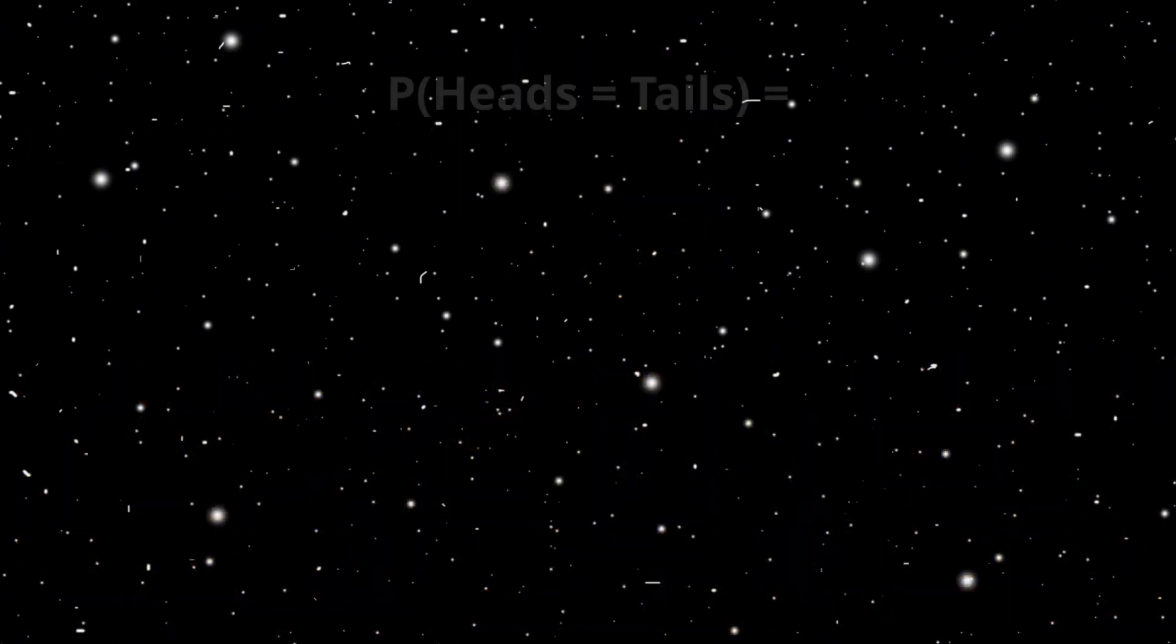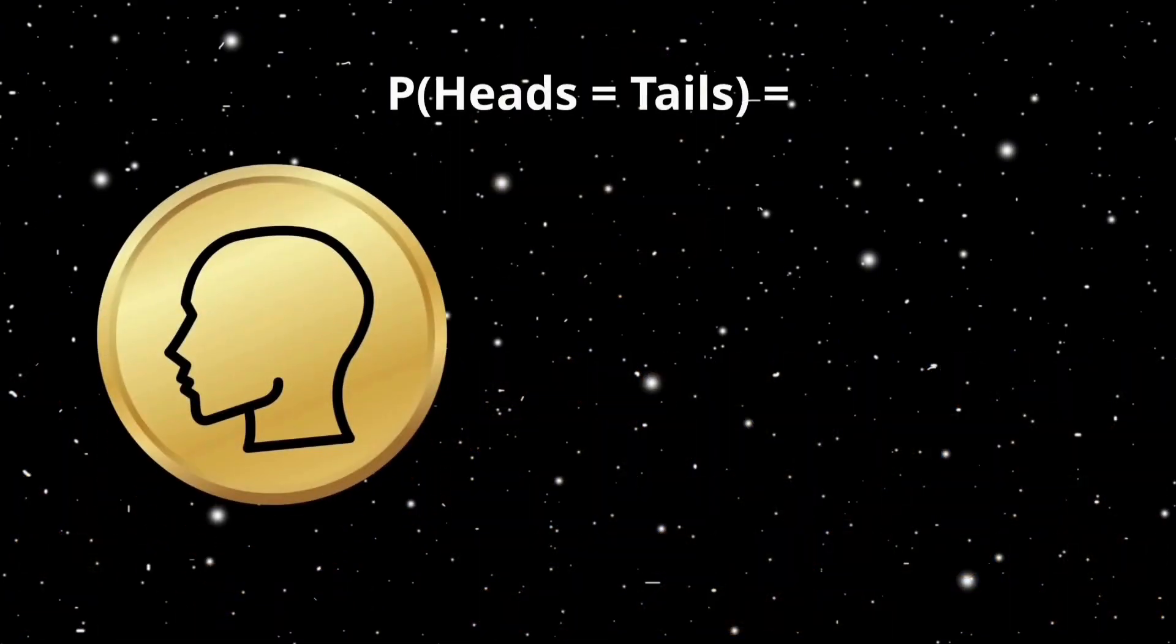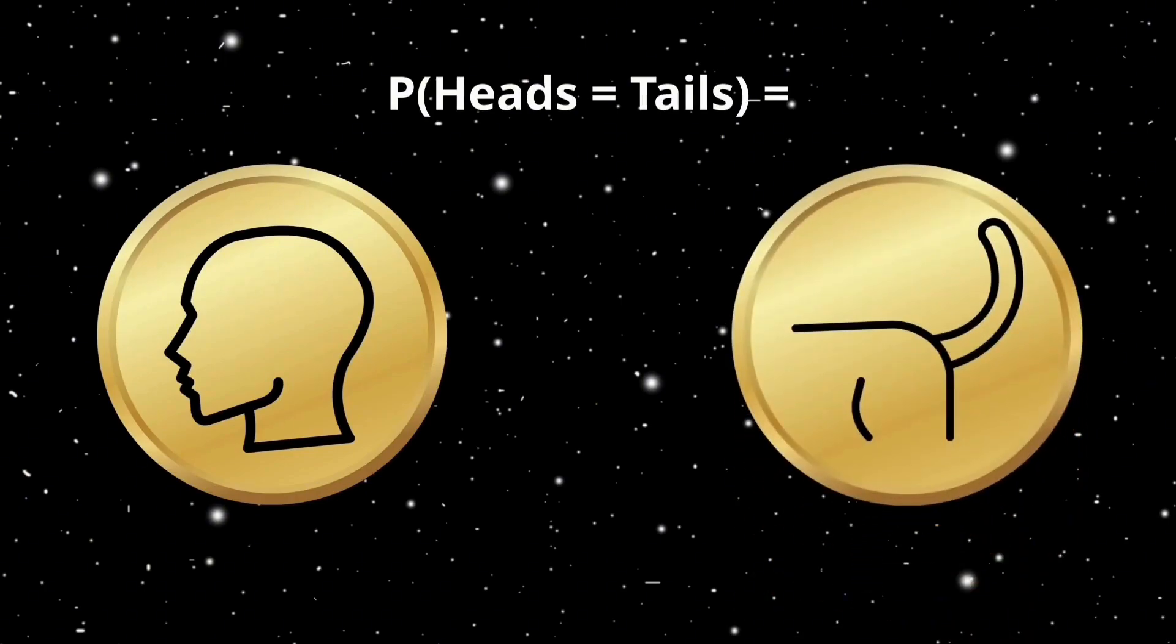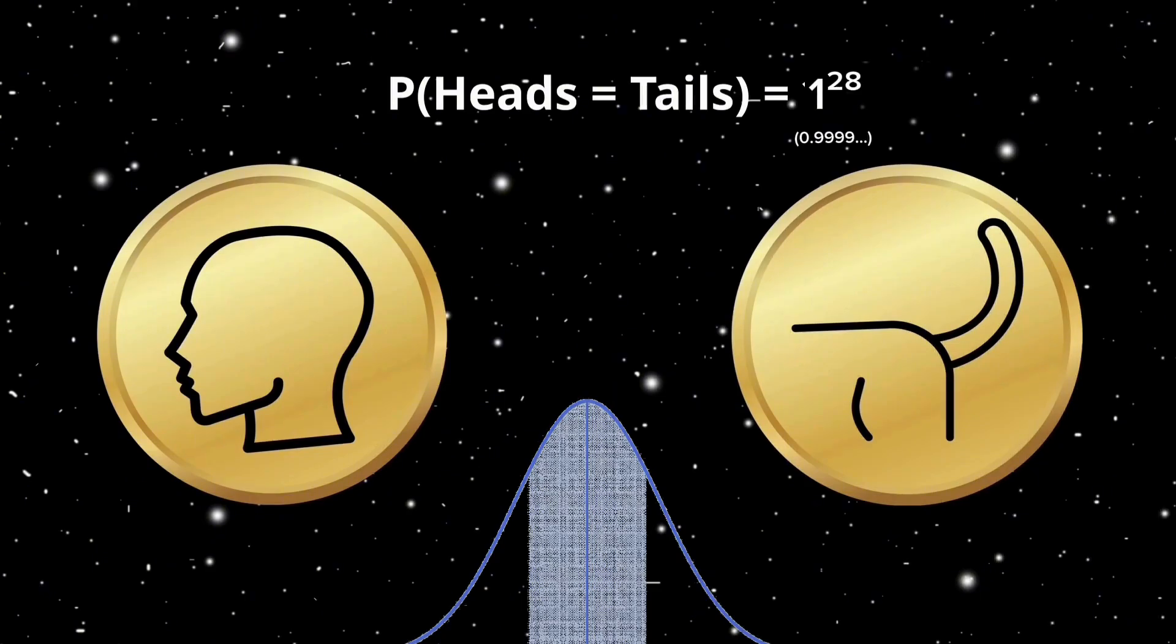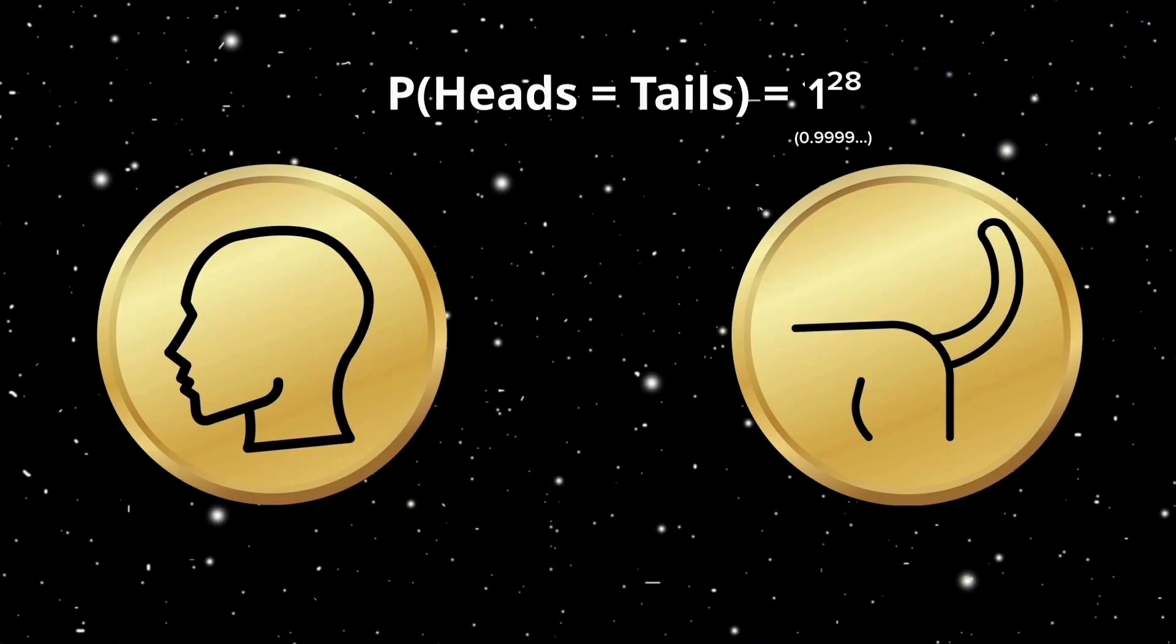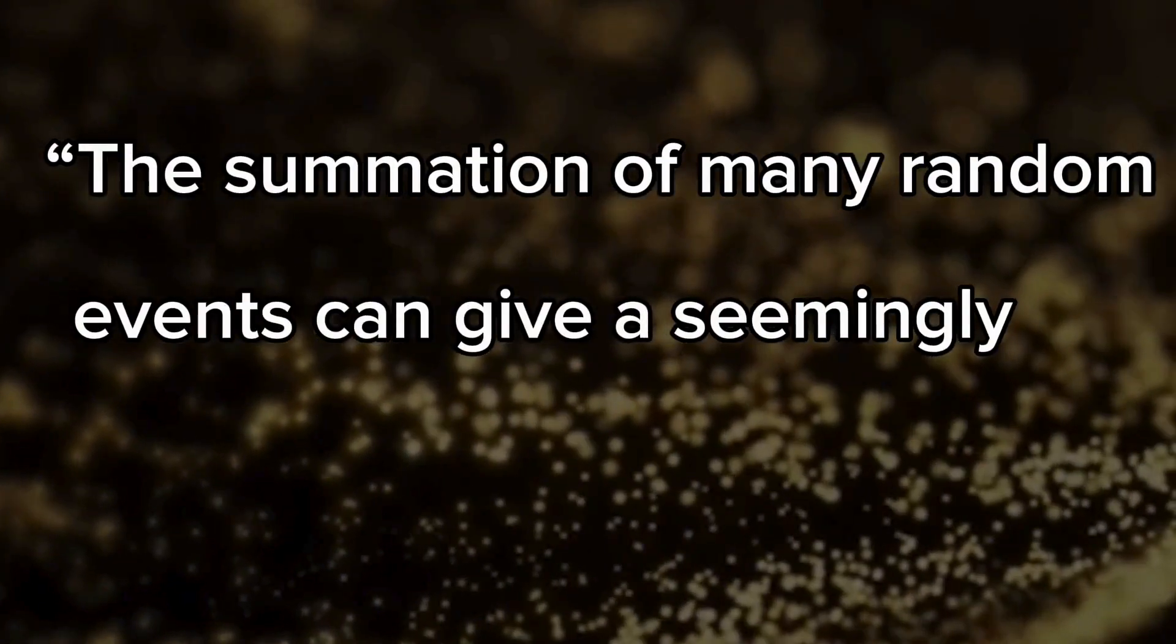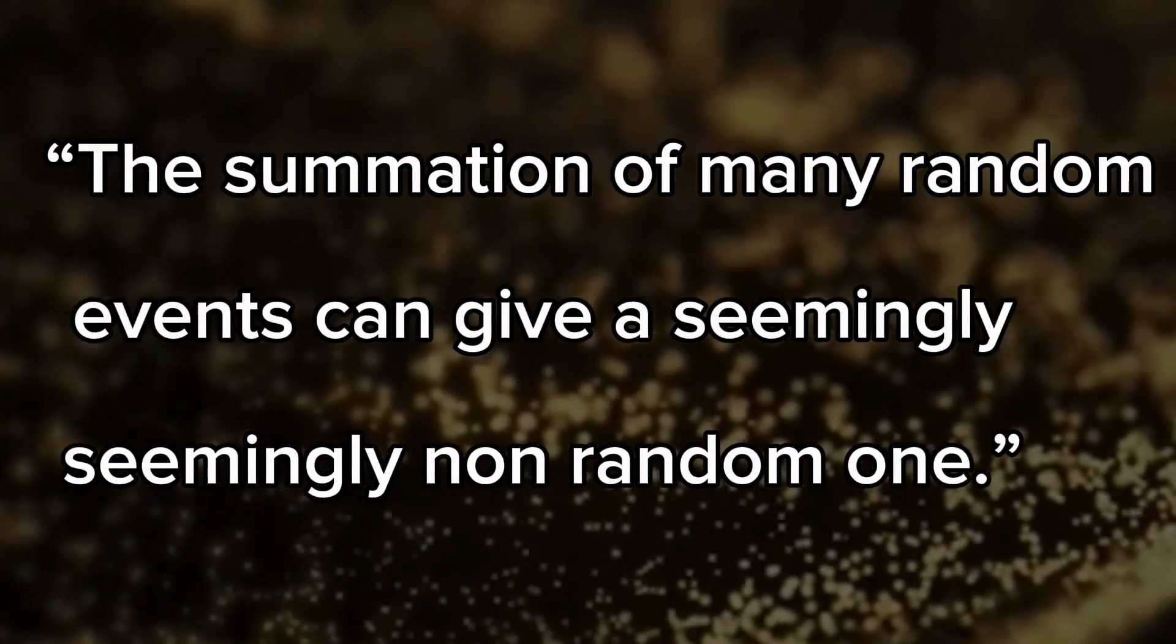One can also show that the probability of getting half the number of tosses as heads and the other half as tails after tossing the coin one million times is nearly 1 to the power 28. In other words, in this case, it's simply impossible to not get it. This can be summarized by one beautiful sentence. The summation of many random events can give a seemingly non-random one.